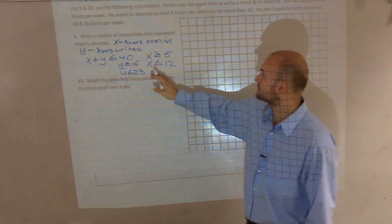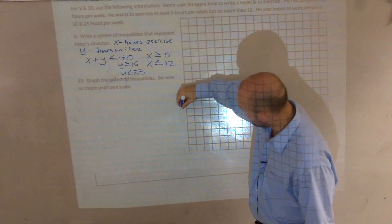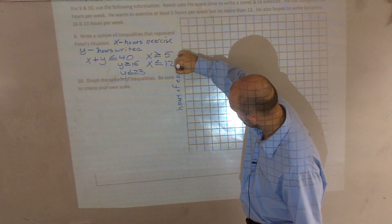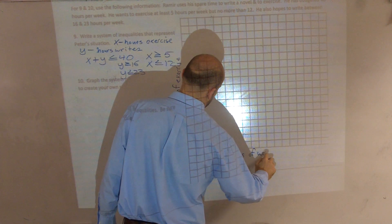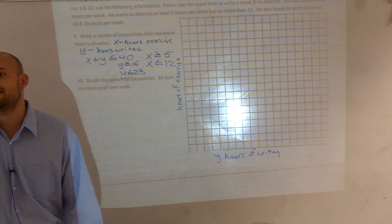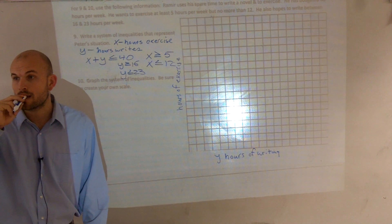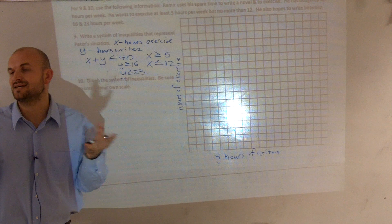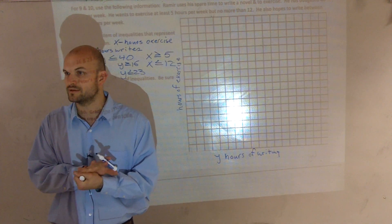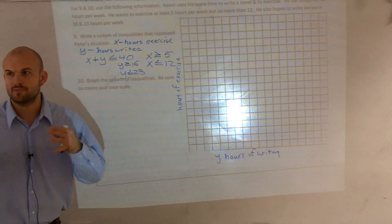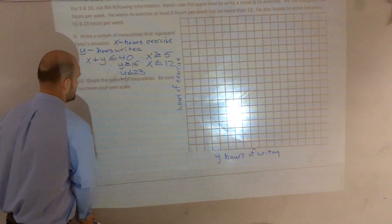The question says to graph the system of inequalities and be sure to create your own scale. I'm going to have x be the hours of exercise and y be the hours of writing. Since one does not depend on the other, it won't change either on your graph — it's really kind of an arbitrary decision. Not one of my variables depends on the other variable, so we're not dealing with a regular x-y coordinate relationship; we're just graphing how they relate to each other.